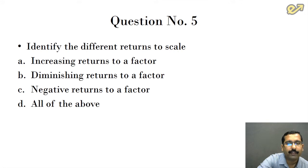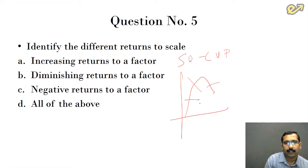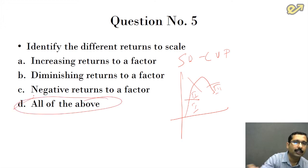Question number five: identify different returns to scale. In the short run, we have the law of variable proportion. We have increasing returns to scale, diminishing returns to scale, then negative returns to scale. We generally call it stage one, stage two, and stage three. So the answer is all of the above, option D.